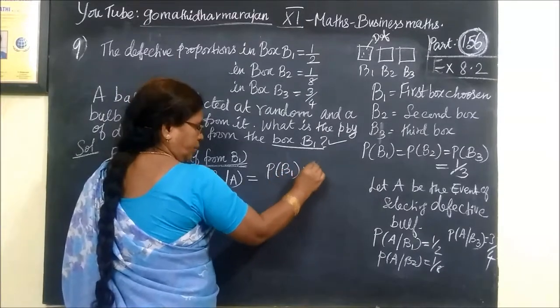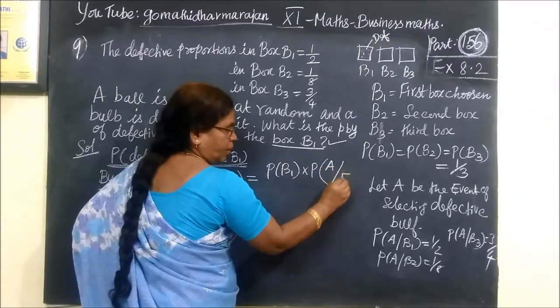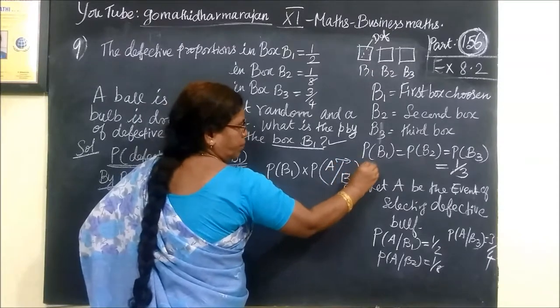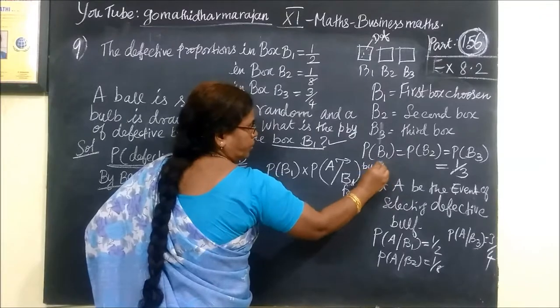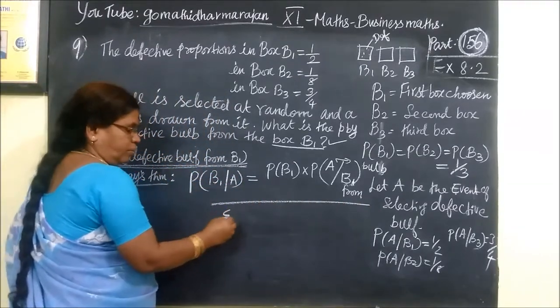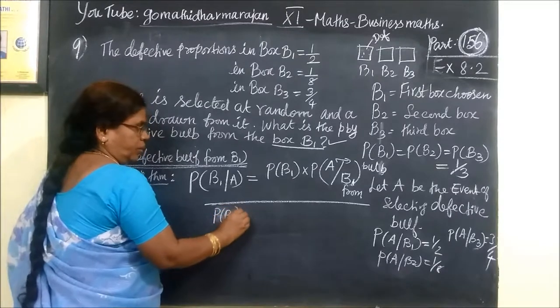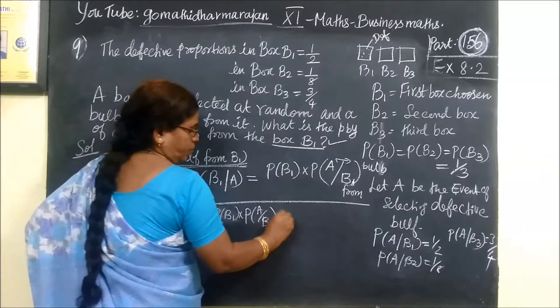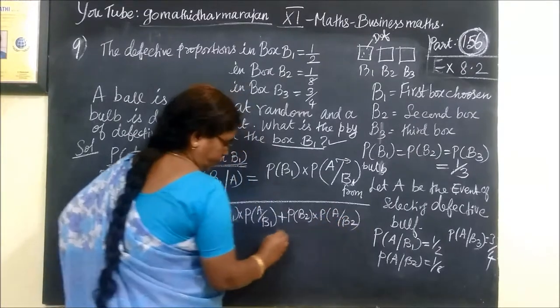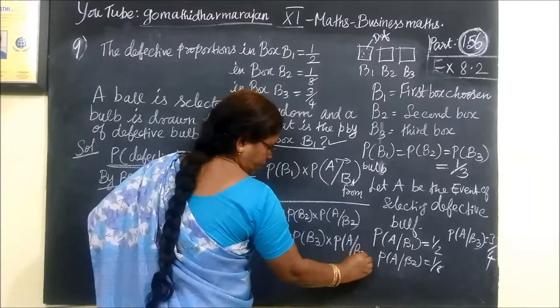P of B1 into P of, in that, we are selecting defective bulb from bag 1. This is B1. We are selecting a defective bulb. Now, we are selecting all. Sigma i equal to 1 to 3. Plus P of B2, then A given B2. Plus P of B3, then A given B3.